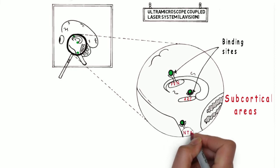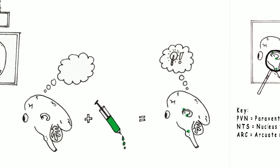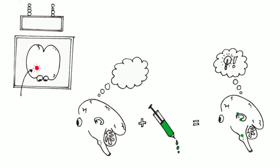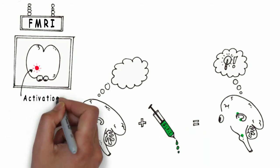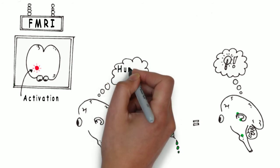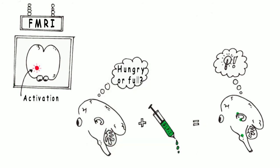However, just because the analogue binds it, doesn't mean the GLP-1 activates the subcortical areas of the brain. By using FMRI scans of the brain, we can see that GLP-1 not only binds, but also activates these specific areas of the brain related to reward.